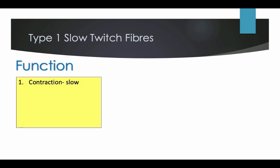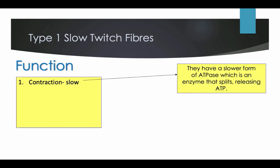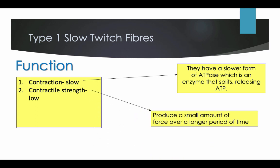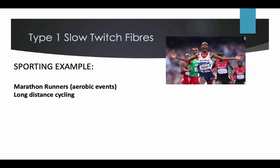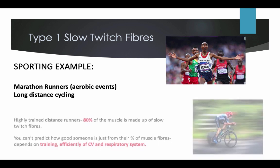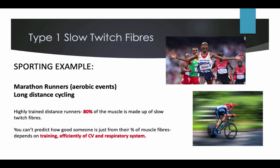Slow twitch fibres have a low glycogen content. Their functions: they contract slowly, have a slower form of ATPase — an enzyme that splits releasing ATP — and a lower contractile strength. They produce small amounts of force over a long period of time and have a high fatigue resistance. They have the enzymes to break down fat and carbohydrates to water and CO2, so less lactic acid and fatigue. They have a high aerobic capacity and a low anaerobic capacity. A sporting example would be a marathon runner or long distance cyclist. Highly trained distance runners have about 80% of their muscle made up of slow twitch fibres. You can't predict performance based on muscle fibre percentage alone — it also depends on training, cardiovascular system efficiency, and respiratory system efficiency.